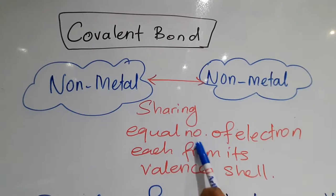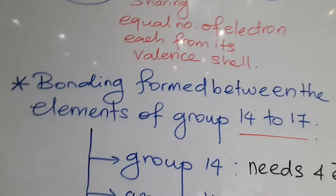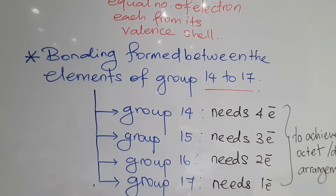The rule of sharing is that they must share an equal number of electrons, each from its valence electrons. When I say non-metals, that means the bonding is formed between elements of group 14 to group 17.